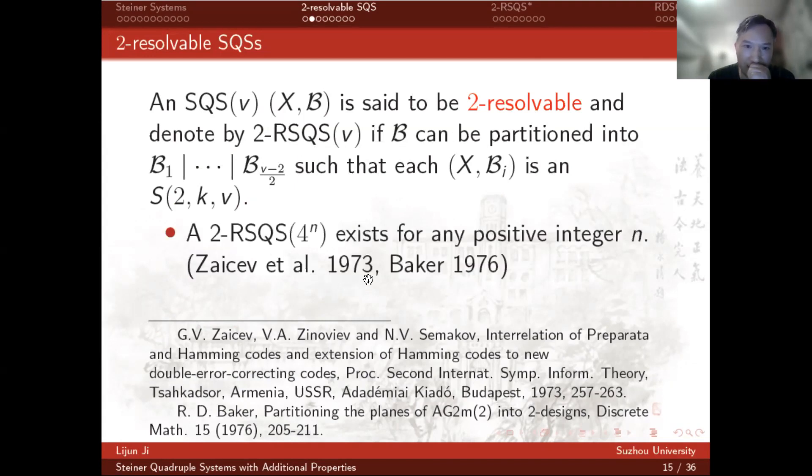In 1973, Seesanft et al. constructed a 2-RSQS of order 4 to the power n.